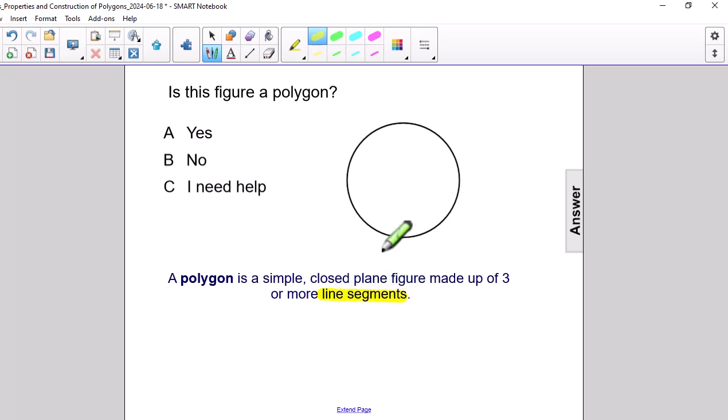Line segments—that's key because line segments are straight, no curves. Polygons have no curves, so this circle, even though it's a common shape, does not classify as a polygon because it has curves. So the answer is no, this is not a polygon.